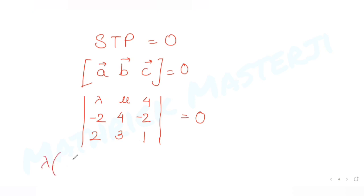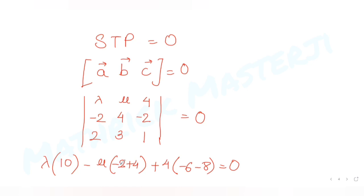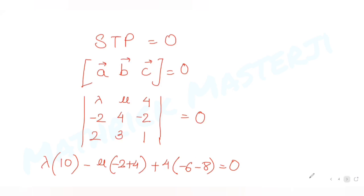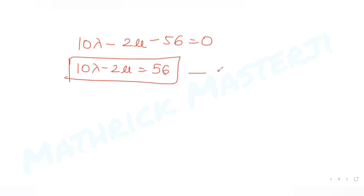Expanding the determinant: λ(4×1 − (−2)×3) − μ((−2)×1 − (−2)×2) + 4((−2)×3 − 4×2) = 0. This gives λ(4+6) − μ(−2+4) + 4(−6−8) = 0, so 10λ − 2μ − 56 = 0, which means 10λ − 2μ = 56. That is our second equation.